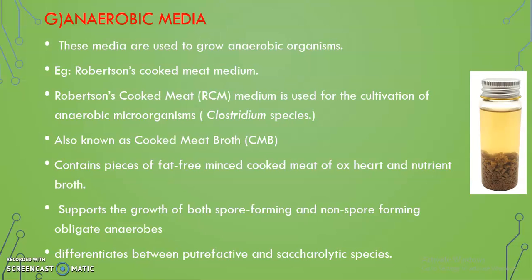Anaerobic medium is used for growing anaerobic organisms. Robertson's cooked meat medium, introduced by Robertson, is an example. It contains fat-free minced cooked meat of ox heart and nutrient broth. It supports the growth of spore-forming and non-spore-forming obligate anaerobes, and differentiates between putrefactive and saccharolytic anaerobic species. The medium is also called cooked meat broth.